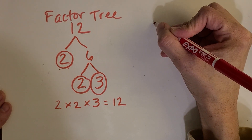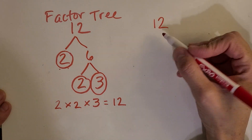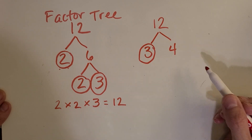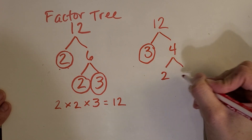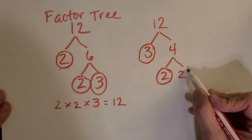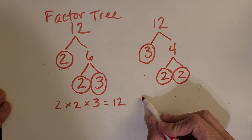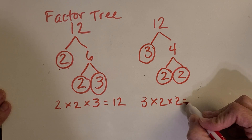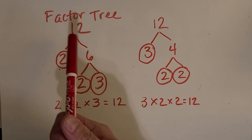Now let's try breaking apart 12 a little differently. Some people might not think of two times six first — they might have thought of three times four. Three is prime and four is composite, so four can be broken up into two times two, and both twos are prime. Comparing the two trees, they have the same primes, maybe in a different order. Three times two is six, and six times two is 12. No matter how you start breaking it apart, you always end up with the same primes that multiply to give your original number.